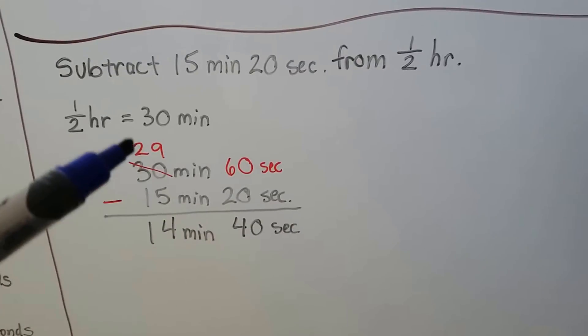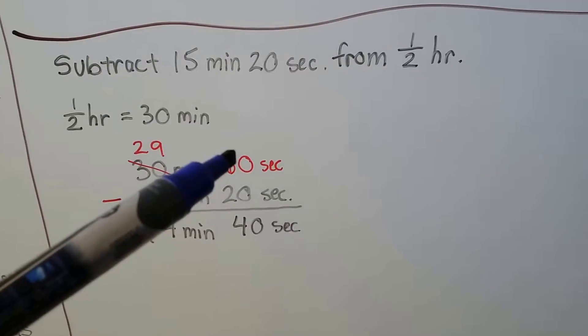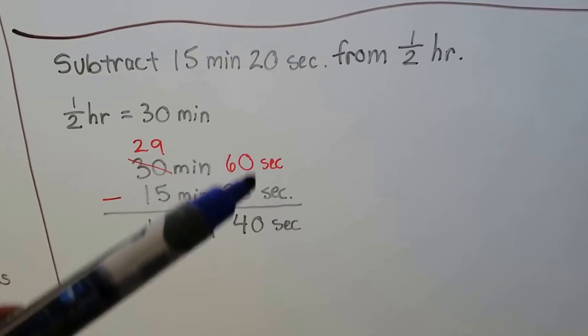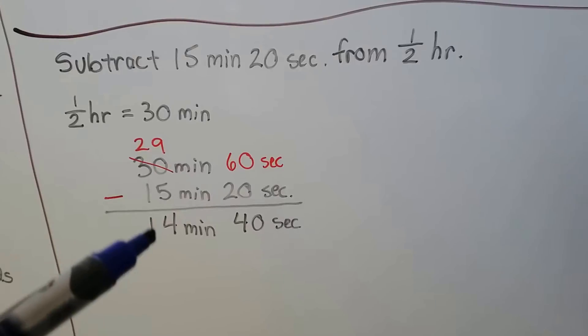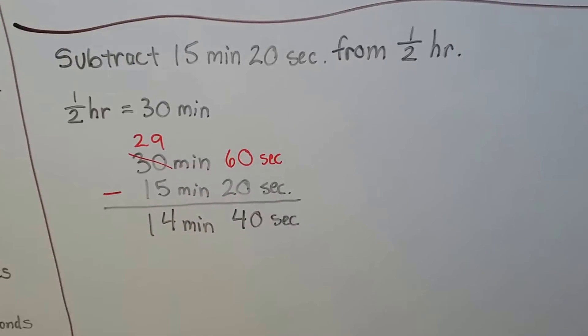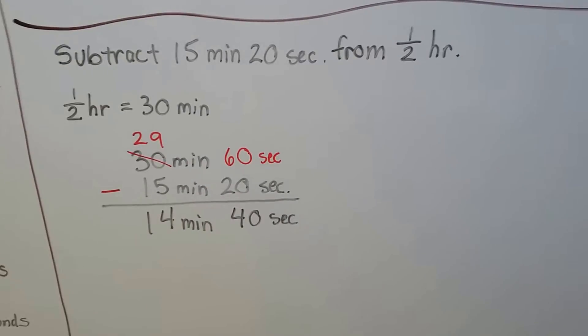So that means we have 30 minutes and we want to take away 15 minutes 20 seconds. We can change the 30 minutes to 29 minutes and give 60 seconds to the seconds side. Now we can get 40 seconds when we subtract and 29 take away 15 is 14. So we have 14 minutes and 40 seconds left over.